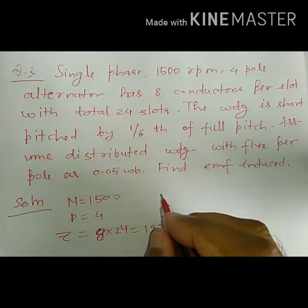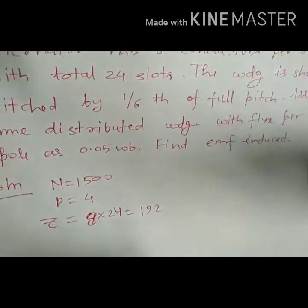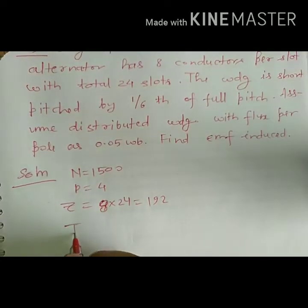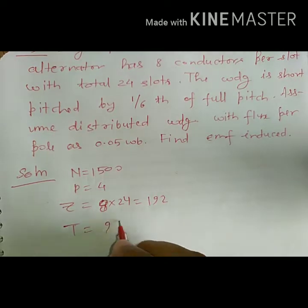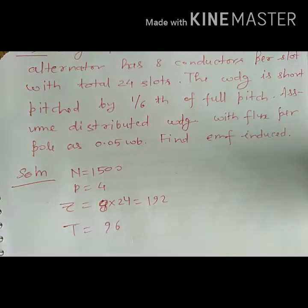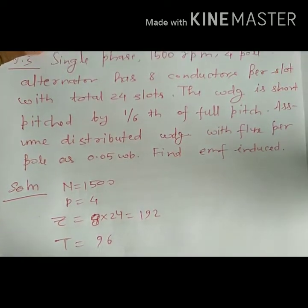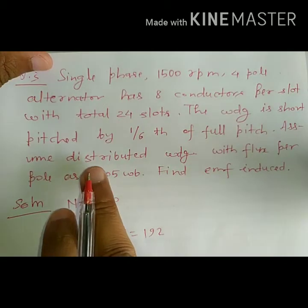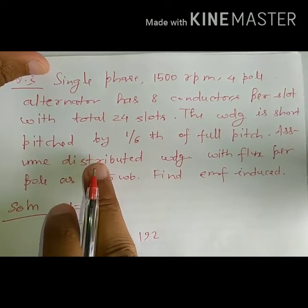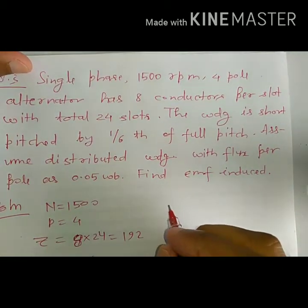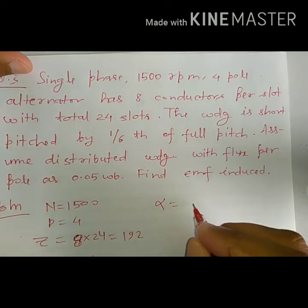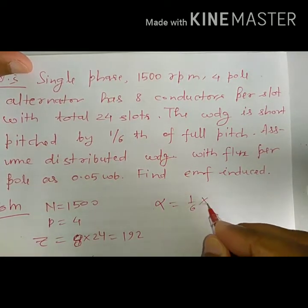We can also write T_ph. T_ph for single phase is 192 divided by 2, that is 96. The winding is short pitched by 1/6th of full pitch. Full pitch is 180 degrees, so alpha will be 1/6th of full pitch.